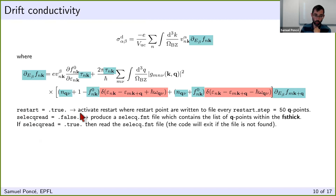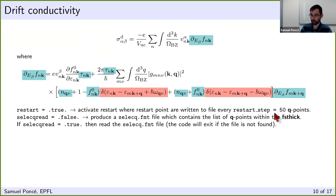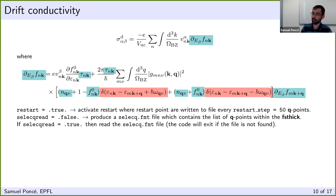There is also an input called restart. If set to true, the code writes a checkpoint every restart_step q-points (e.g., every 100). If the calculation crashes due to time limits, the code detects the restart.fmt file and automatically restarts from that point. Be careful: if you change the input inconsistently and the restart.fmt file is still present in the same folder, you may get errors — in that case remove the file.